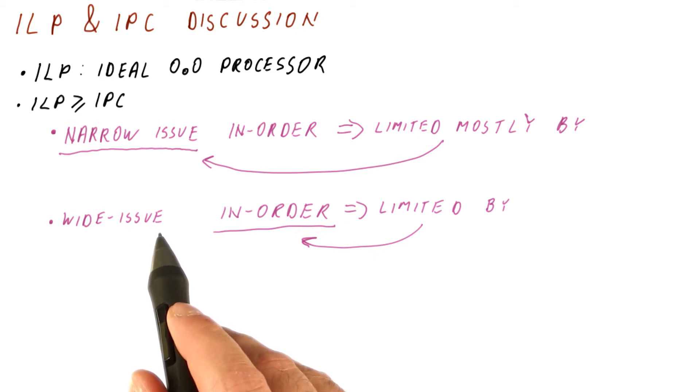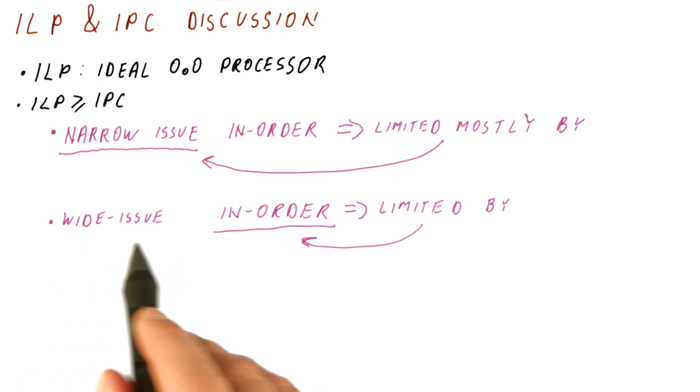And if it can do closely to what the ILP already is for the application, then basically we're already kind of close to ideal as far as the IPC is concerned for the wide-issue problem. But because of the in-order property, we just cannot find those instructions to keep our wide-issue slots busy.